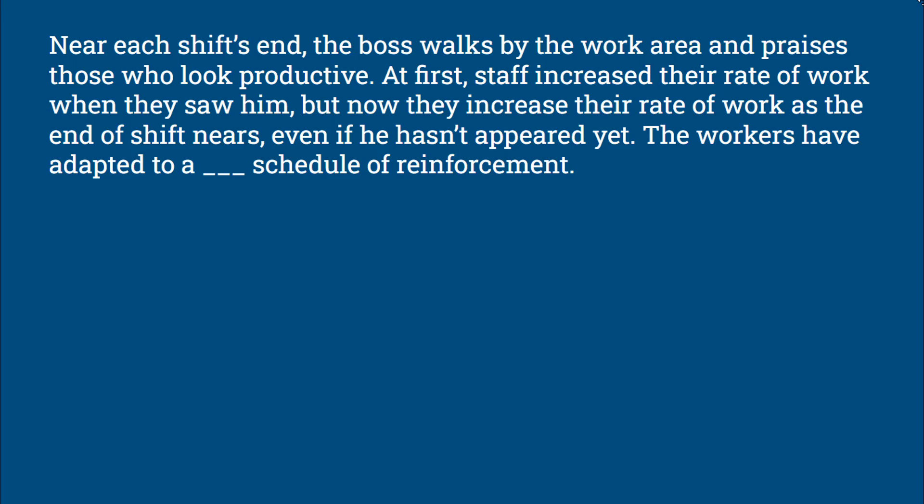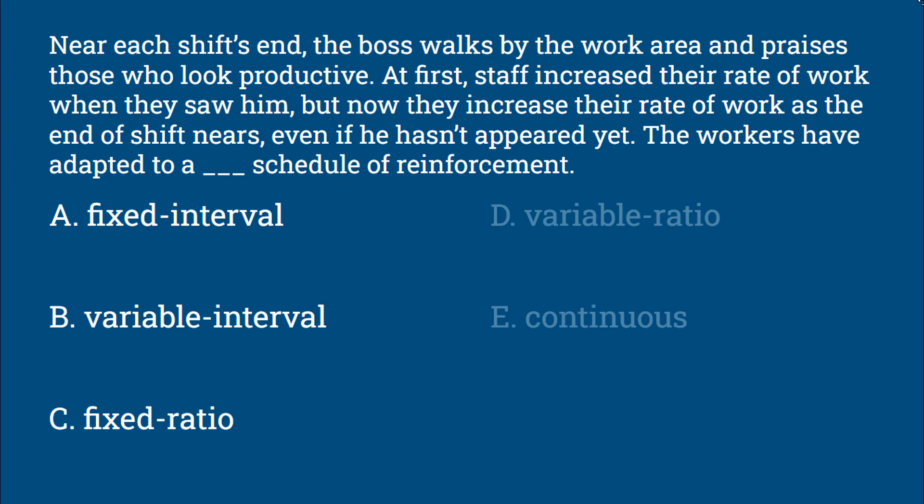Question 3: Near each shift's end, the boss walks by the work area and praises those who look productive. At first staff increased the rate of work when they saw him, but now they increase the rate of work as the end of shift nears even if he hasn't appeared yet. The workers have adapted to a blank schedule of reinforcement. Is this a fixed interval schedule, a variable interval schedule, a fixed ratio schedule, a variable ratio schedule, or a continuous schedule?